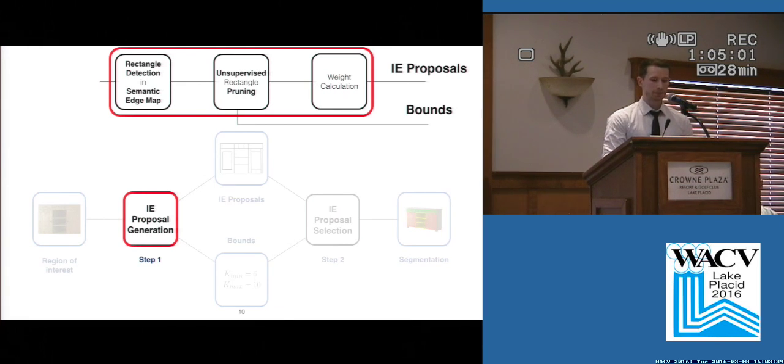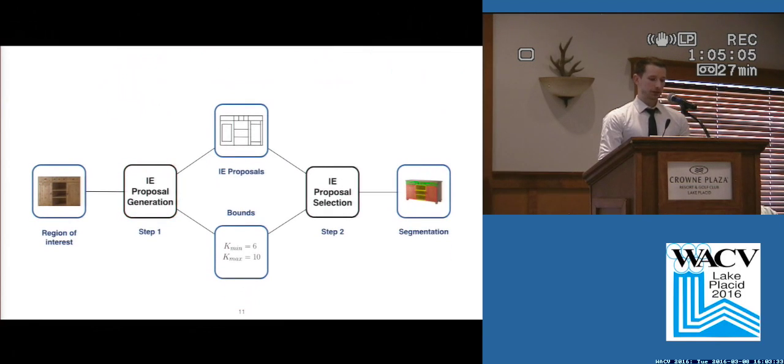Finally, we weight the proposals. So the first step gives us the proposals and the two bounds. In the second step, we select the proposals that will make up the final semantic segmentation. The paper is called Semantic Segmentation of Modular Furniture, and modular is well-defined in this case.